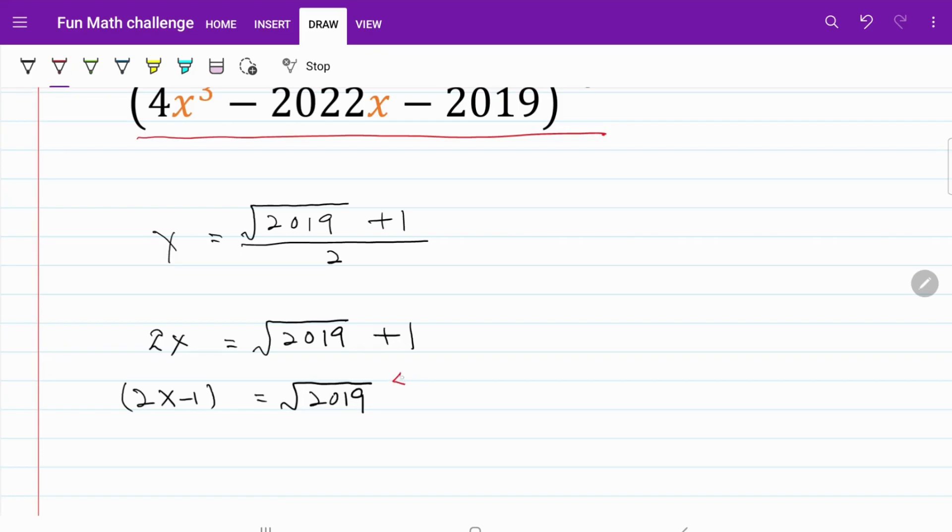I'm going to try to get rid of the square root of 2019. And the way to do it is to have square on both sides. So here it is, 2x minus 1 square is equal to 2019.